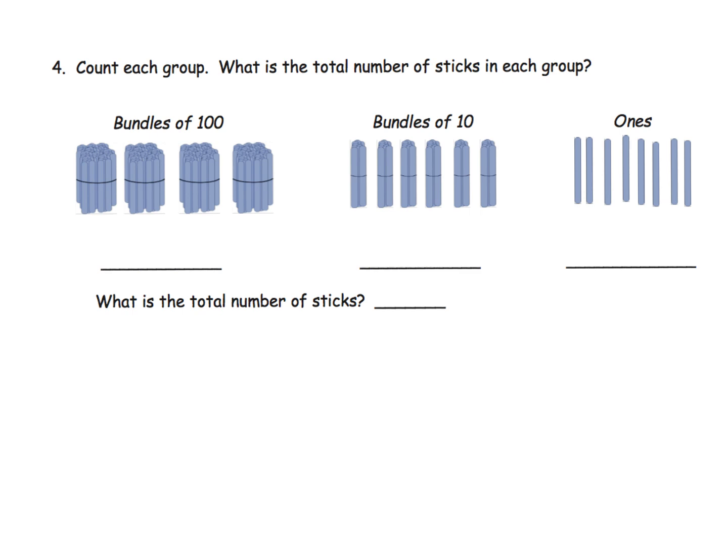And so here they give us pictures. And it says, count each group. What is the total number of sticks in each group? So if we've got bundles of a hundred, we've got 100, 200, 300, 400. So all together, we have 400 sticks in that pile.